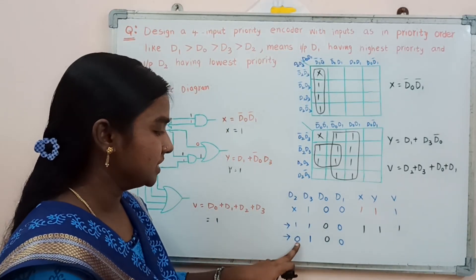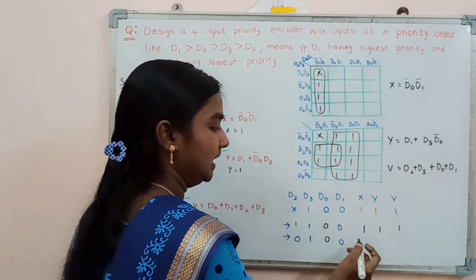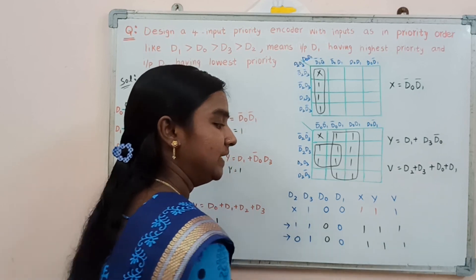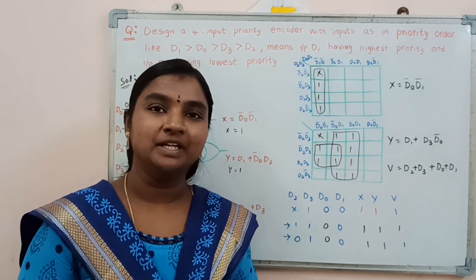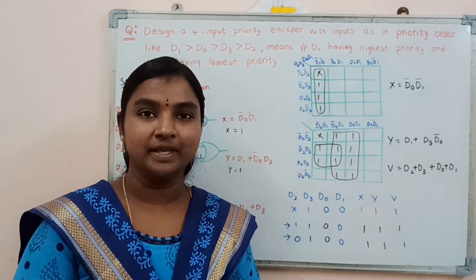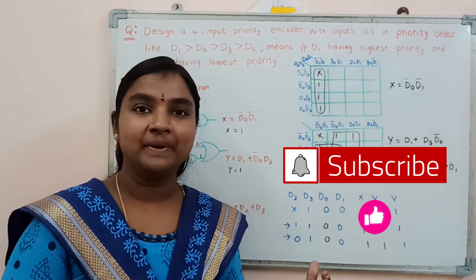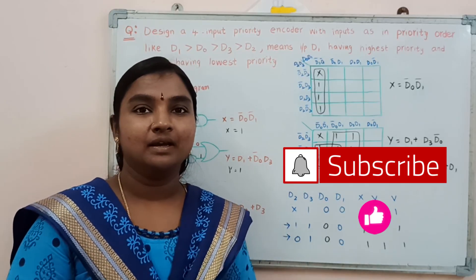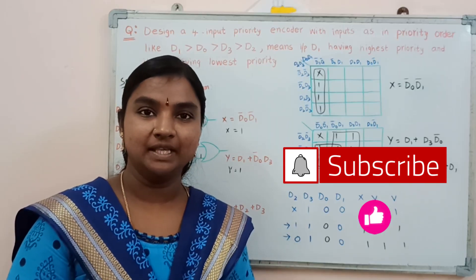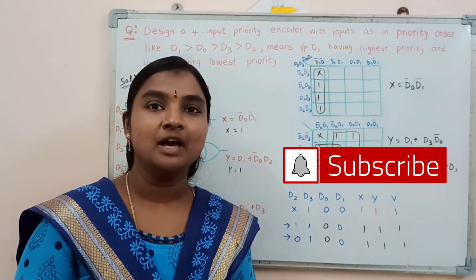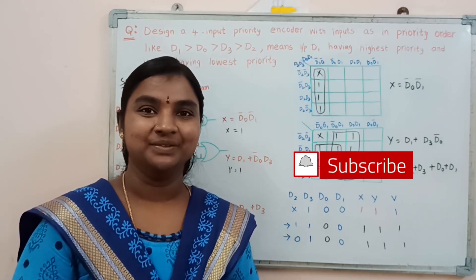By applying this combination we get the same binary code for d3 input: 1, 1, and v equals 1. In this manner we can find out any priority encoder if a priority order is mentioned — by considering that priority we design the logic diagram. If no priority is mentioned, we give priority to the higher subscript input value.